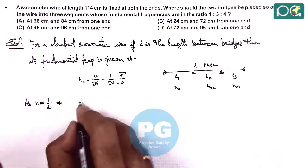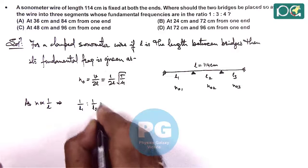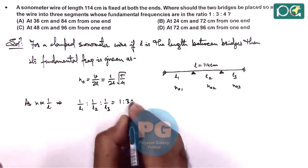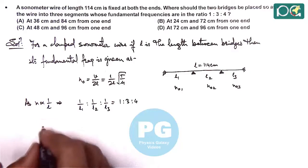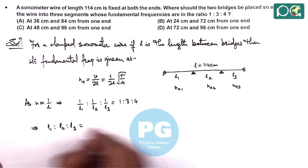We can write 1/L₁ : 1/L₂ : 1/L₃ is given as 1:3:4, because the fundamental frequencies are in ratio 1:3:4. Rearranging terms by taking the reciprocal, L₁:L₂:L₃ gives 12:4:3.